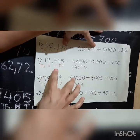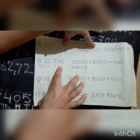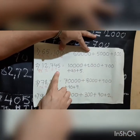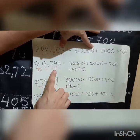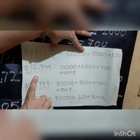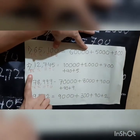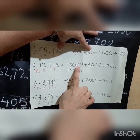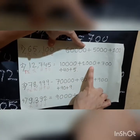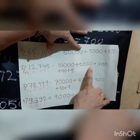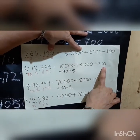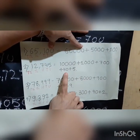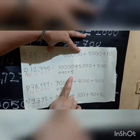Second example: 12,745. Looking at the place values — ten-thousands, thousands, hundreds, tens, units — therefore the expanded form is 10,000 plus 2,000 plus 700 plus 40 plus 5.